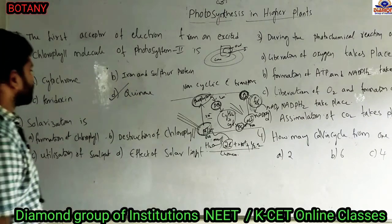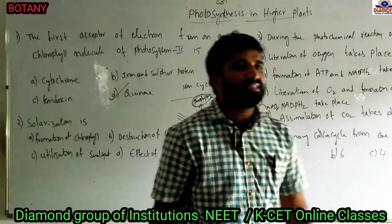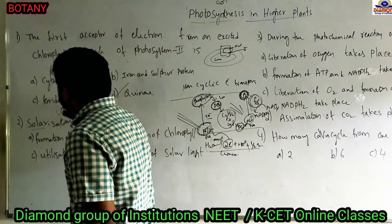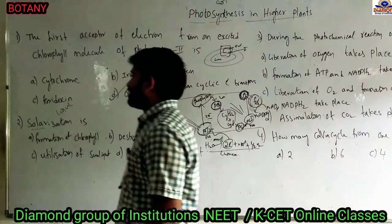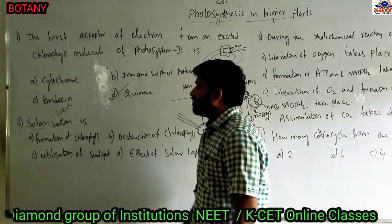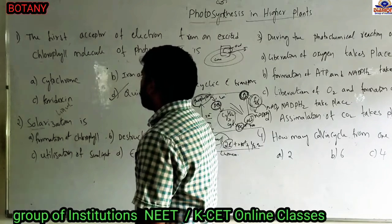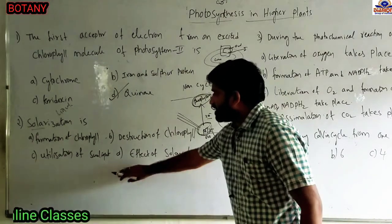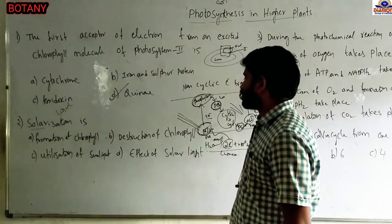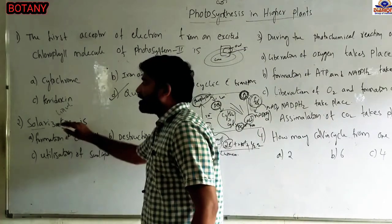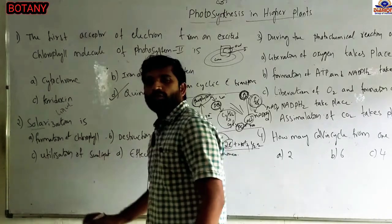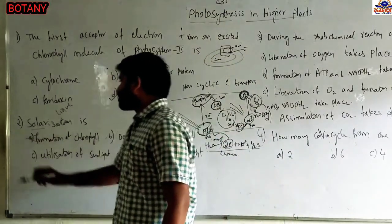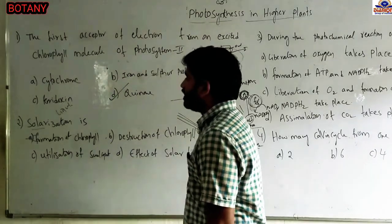Next question: Solarization. The name itself tells us — solar means light. Due to the presence of high light intensity, what happens? Option A: formation of chlorophyll. Synthesis of chlorophyll pigments does not occur in light, so option A is not correct. Option B: distortion of chlorophyll. Solar refers to a high intensity of light falling on chlorophyll pigments, causing their destruction — this is called distortion of chlorophyll pigments.